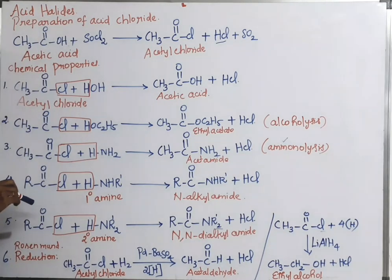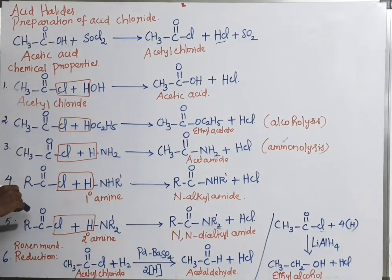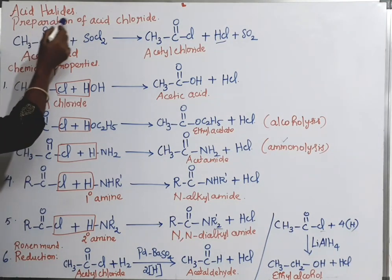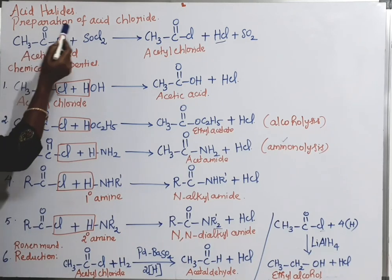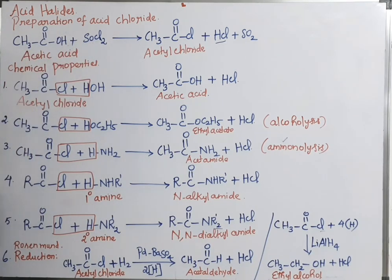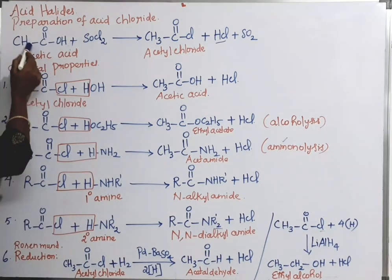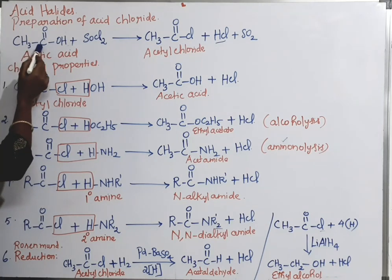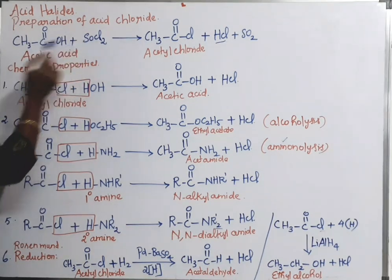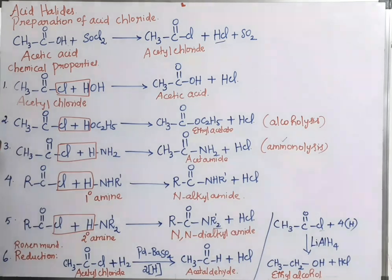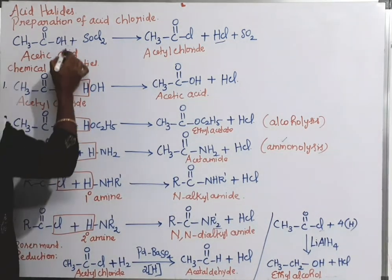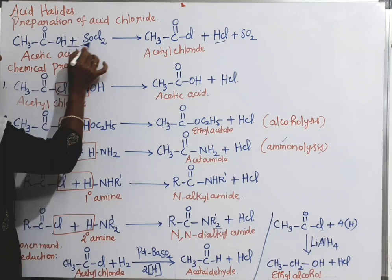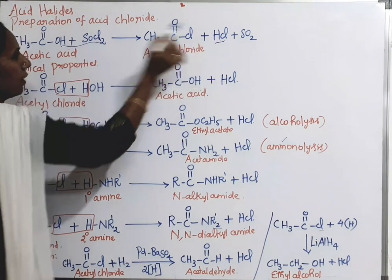What is the preparation of acid chloride? The reaction for preparation of acid chloride is that acetic acid (CH3COOH) reacts with thionyl chloride (SOCl2). Here, the hydrogen and one chlorine atom are removed as HCl.